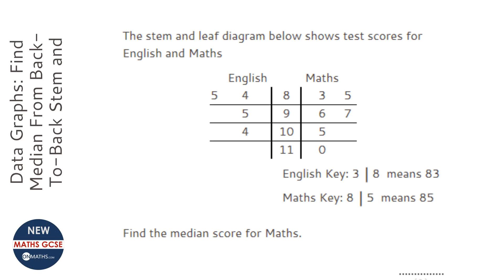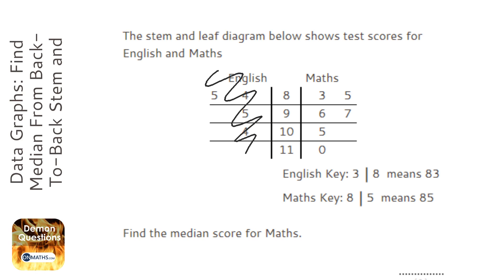In this question we're asked to find the median test score for maths, so we can ignore the left hand side since we're only looking at the right hand side. When we find the median we're basically finding the value in the middle — the middle value.